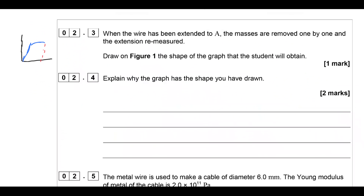The next question wants us to draw on the graph what happens when we unload the wire. The blue line is the original; the red line shows what happens as you unload it. You should see it leaves a permanent deformation, and the straight line should be parallel to the straight-line section of the original graph. We've broken some bonds in the material by applying a very large force - that's why we get permanent deformation. But we've still got the same bonds which apply the same force, so it extends in the same way as before - that's why it's parallel.